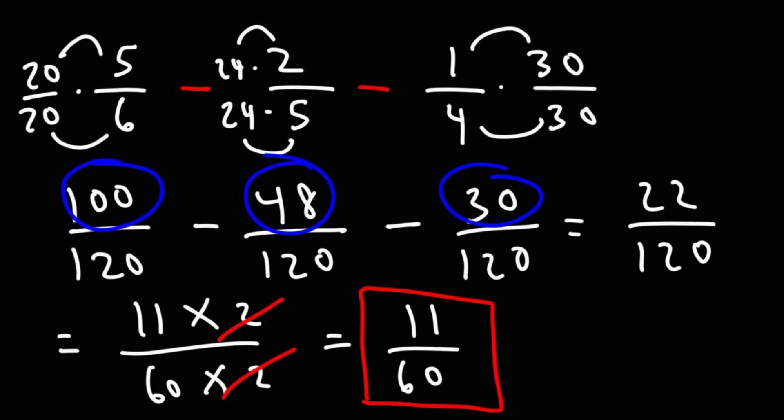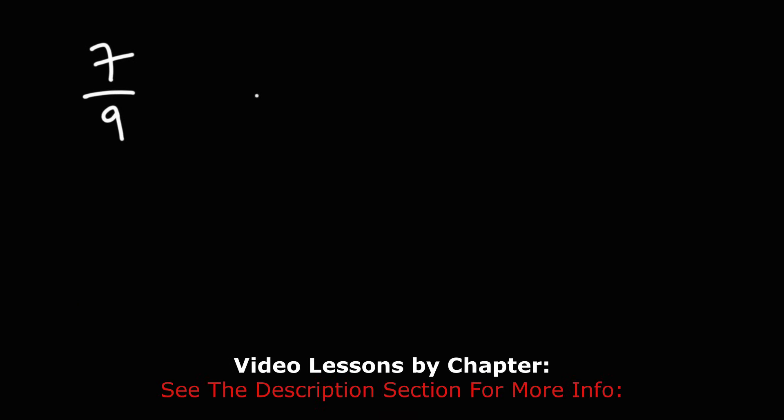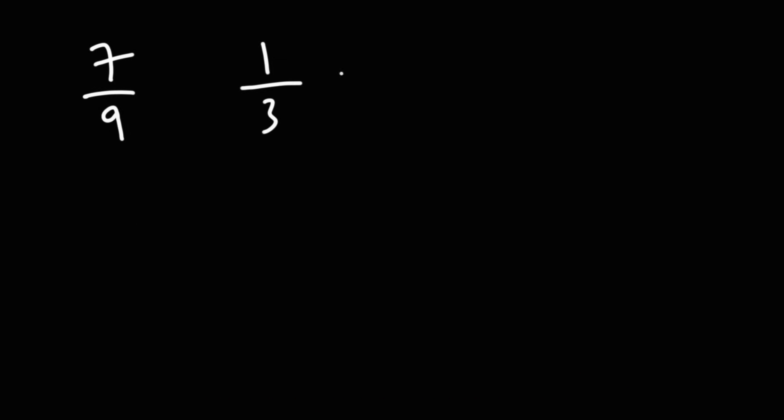So that's the answer for this example. Now, let's try another problem. Feel free to try this one if you want to. 7 over 9. We're going to have 1 over 3 and 2 over 5. And let's put a minus sign between the 3. Go ahead and subtract those three fractions.